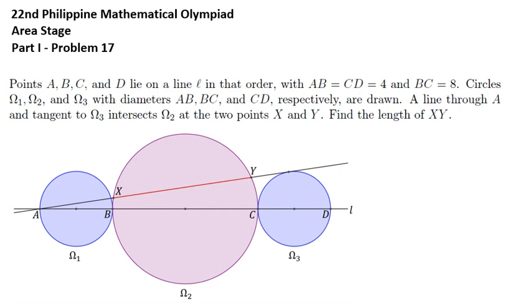The challenge here is to find connections among parts of the figure. But before we find such connections, let's use the given information to label some parts. We know that the diameter of omega 1 is 4, so its radius is 2.